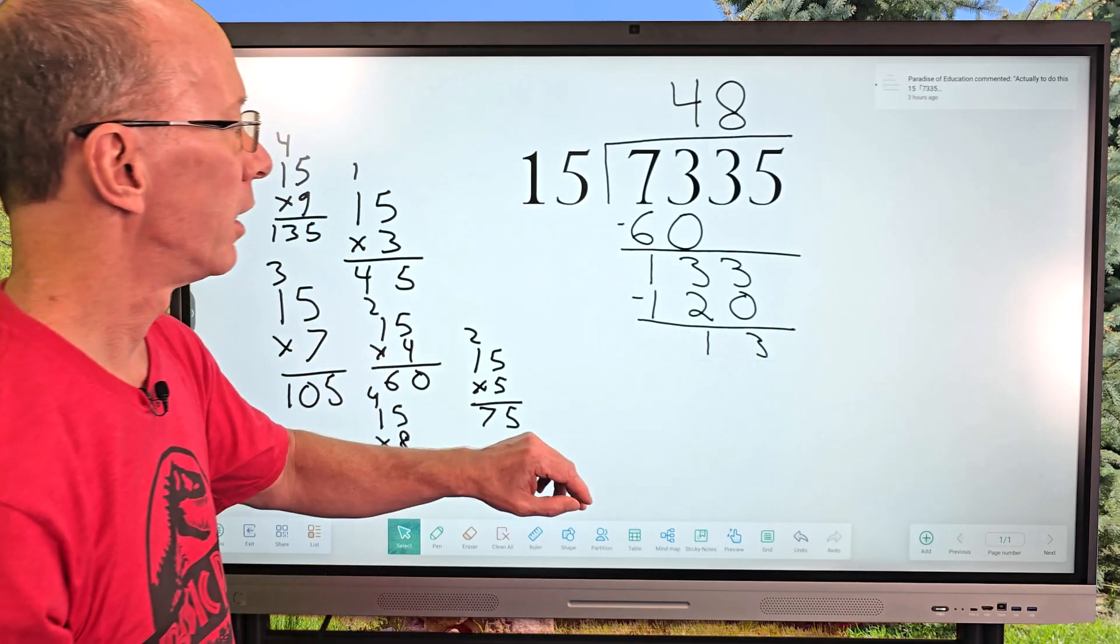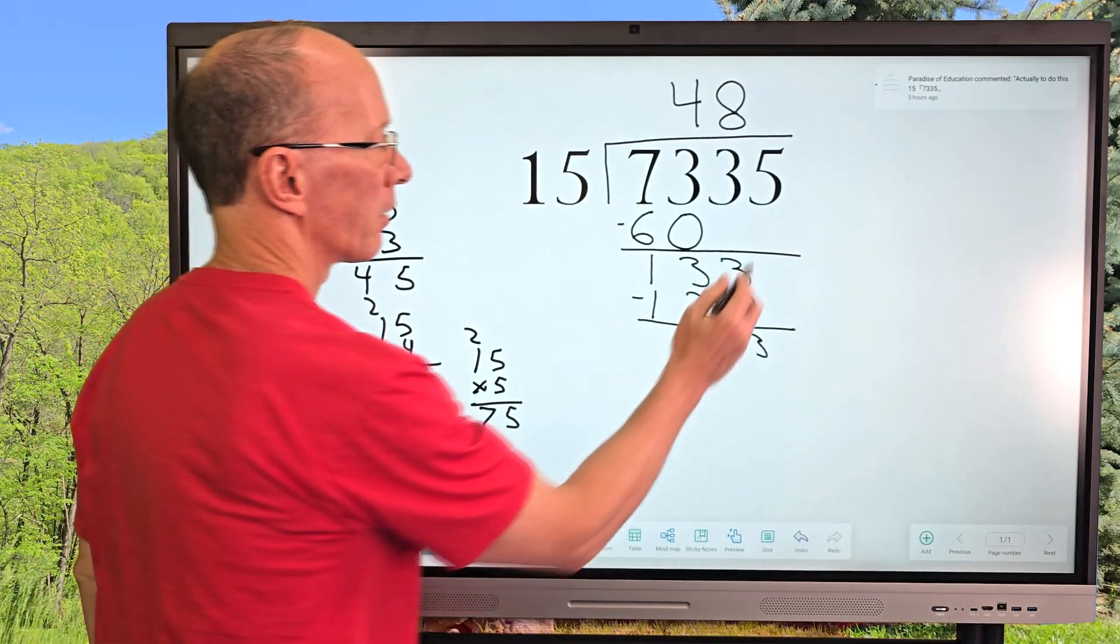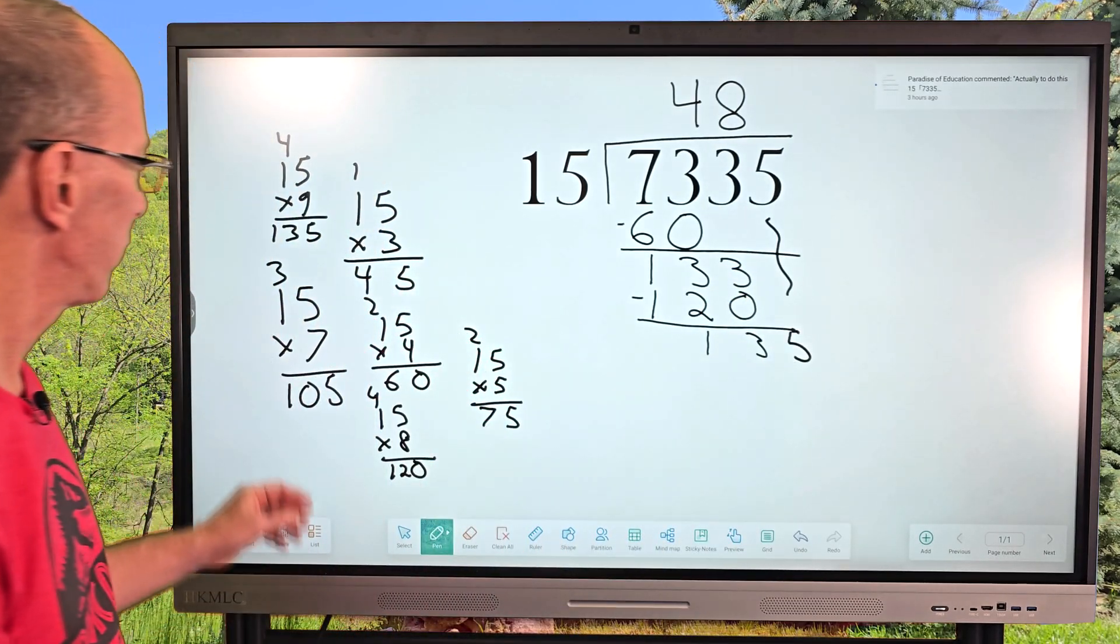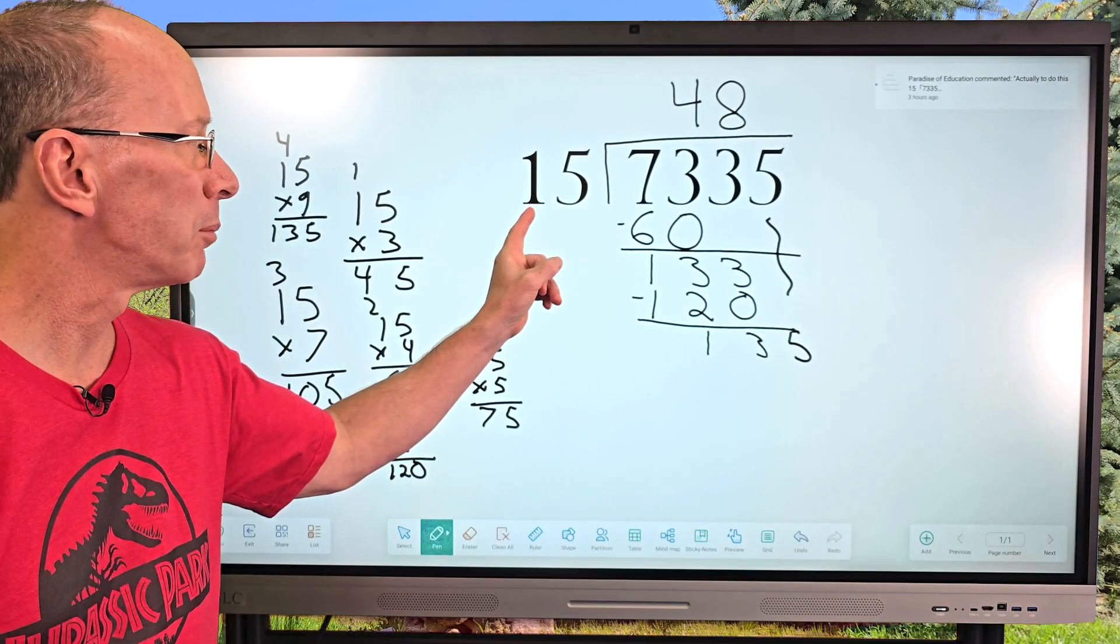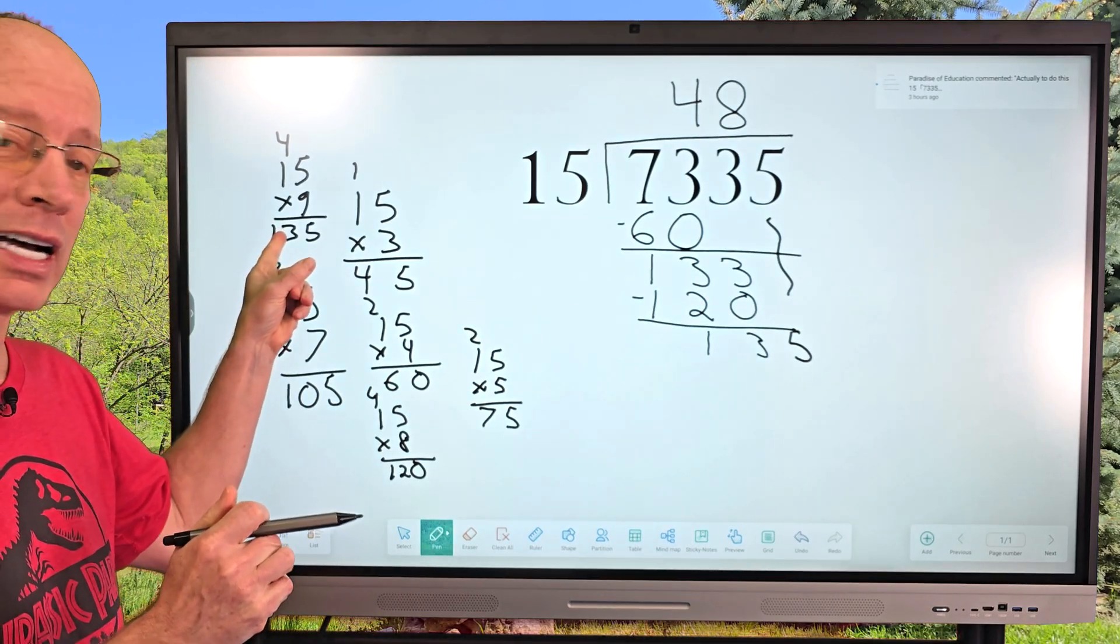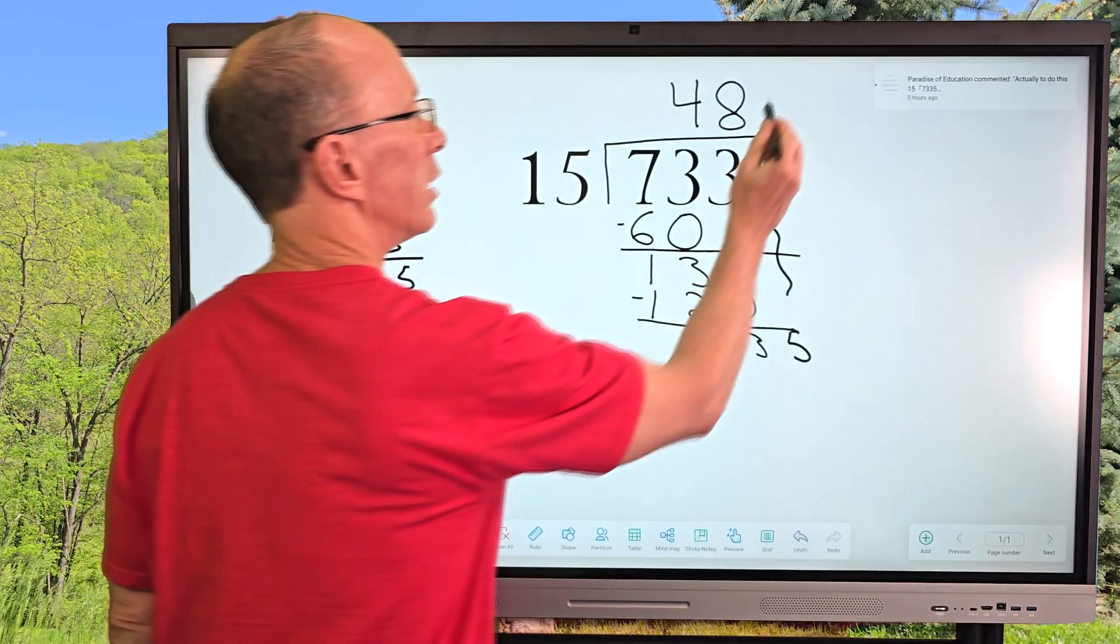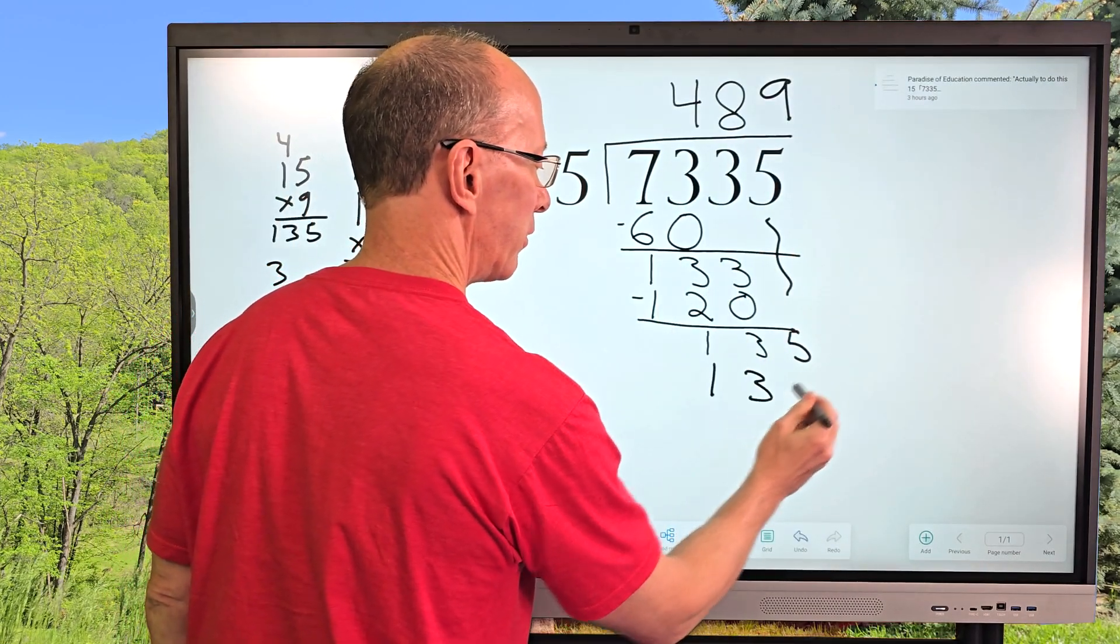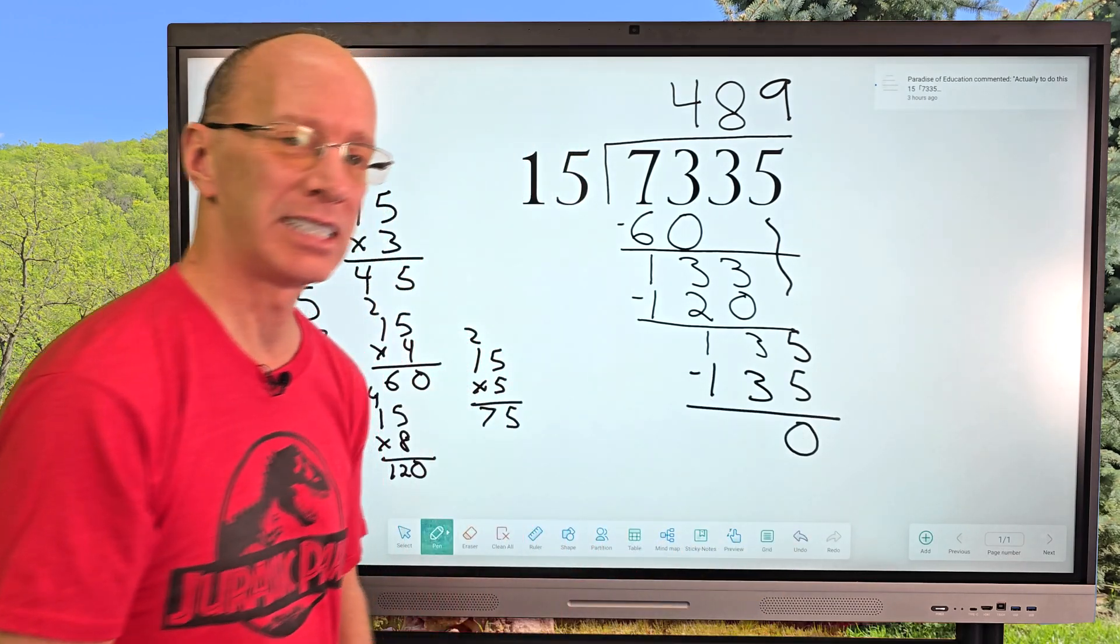And now I have 13. And now I'm going to drop the next number down, which is a 5. Right here. I'm going to drop this all the way down here. Now, do I have a number that can fit into 135? How many times can I put 15 into 135? Right here. 9. 9 times 15 equals 135. So let's go ahead and put 9 right here. So 9 times 15 is 135. We subtract. And we have a remainder of 0.